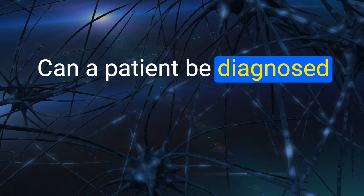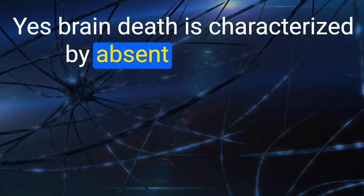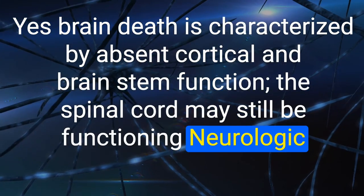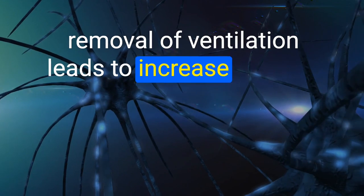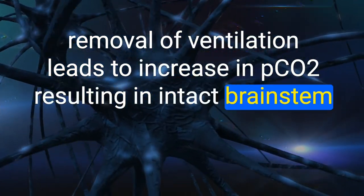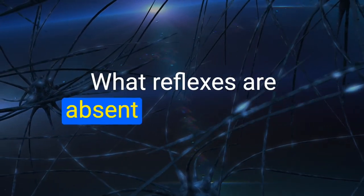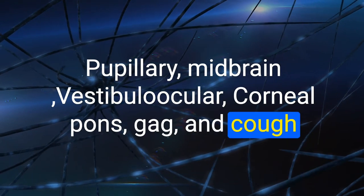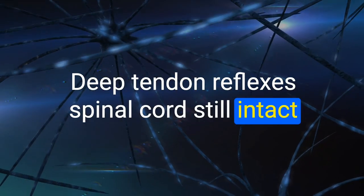82. Can a patient be diagnosed with brain death if they have intact deep tendon reflexes? Yes — brain death is characterized by absent cortical and brain stem function; the spinal cord may still function. Brain death requires: coma with known cause, absence of brain stem reflexes, and apnea test. Absent reflexes: pupillary (midbrain), vestibular, corneal (pons), gag and cough. Present reflexes: deep tendon reflexes (spinal cord still intact).